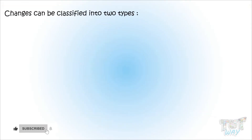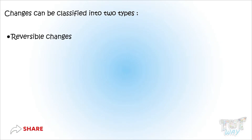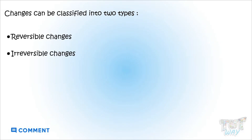Changes can be classified into two types: reversible changes and irreversible changes. Now let's learn about them in detail.